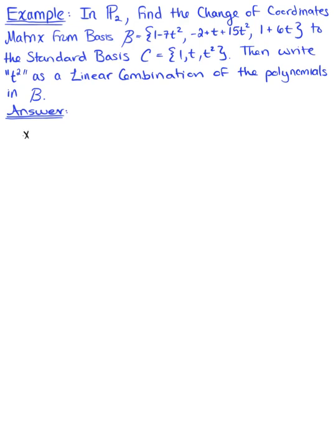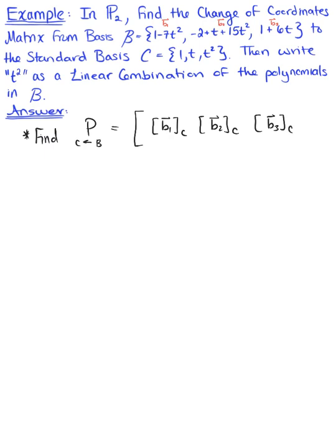The first thing we want to do is find the change of coordinates matrix P from basis B to basis C. This is the matrix defined by the coordinate vectors of the vectors in basis B relative to basis C. So the change of coordinates matrix from basis B to basis C has column vectors defined as the coordinates of b₁ relative to C, the coordinates of b₂ relative to C, and the coordinates of b₃ relative to the standard basis C.